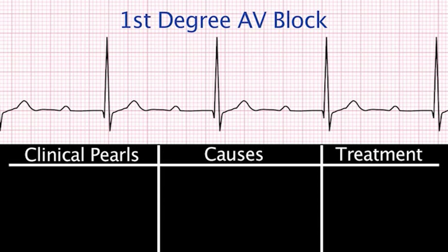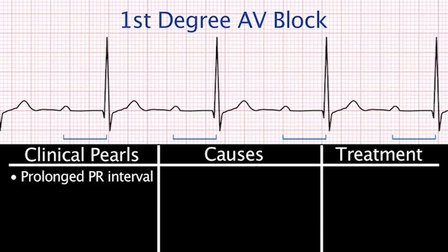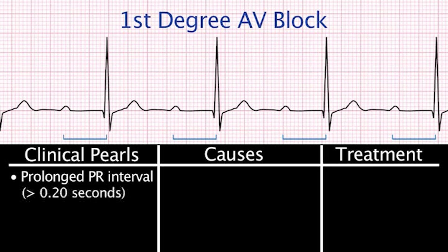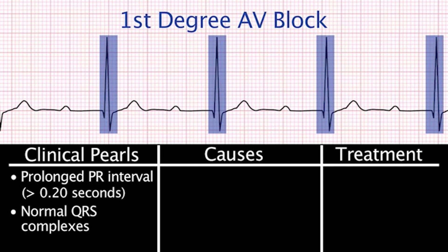First-degree AV block: the PR interval is prolonged beyond the upper limit of normal for the patient's age and heart rate — the PR interval is greater than 0.20 seconds. Sinus rhythm is maintained, and the QRS complex is normal in configuration.